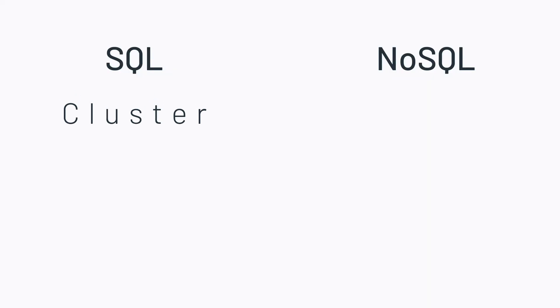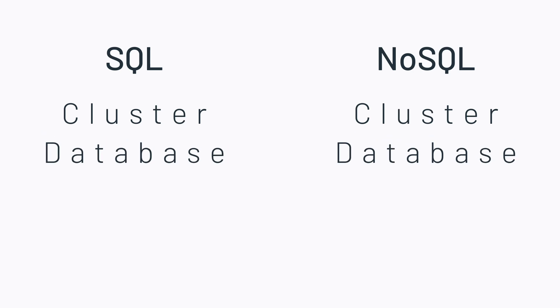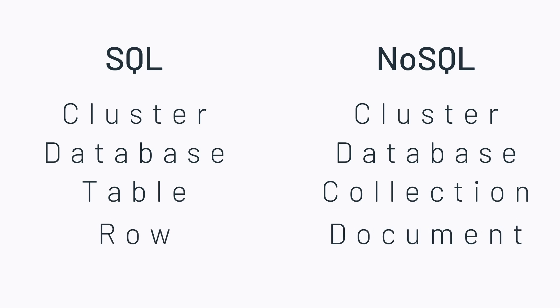Let's take a look at some terminology differences between SQL and NoSQL. In SQL, a cluster is a cluster in NoSQL. In SQL, we have a database — also in NoSQL, we have a database. But here's where the differences come in: in SQL, we have tables, but in NoSQL, we have collections. In SQL, we have rows, but in NoSQL, we have documents. In SQL, a column is in NoSQL a field.